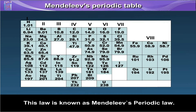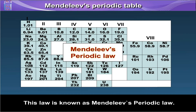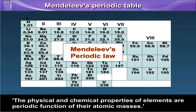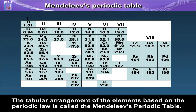This law is known as Mendeleev's periodic law. It states that the physical and chemical properties of elements are a periodic function of their atomic masses. The tabular arrangement of the elements, based on the periodic law, is called Mendeleev's periodic table.